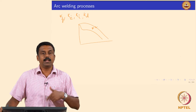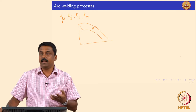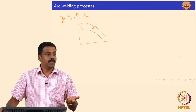This is very important to understand because in this class we are going to look at the selection of shielding gases — how we can select the shielding gas based on our heat input and arc characteristics.